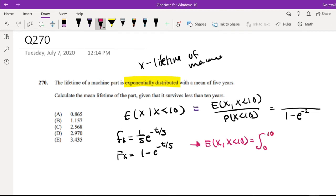Since we're restricting X to be less than 10, we integrate x times 1/5 e to the negative t over 5 dx.